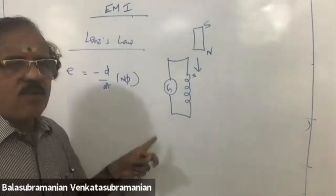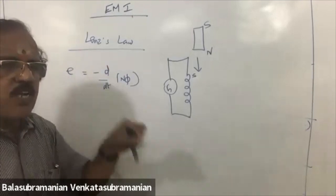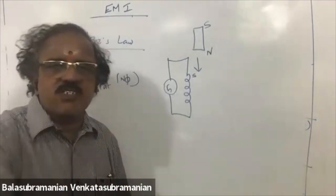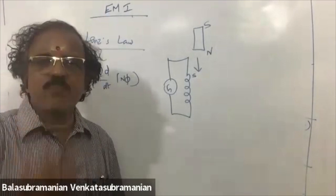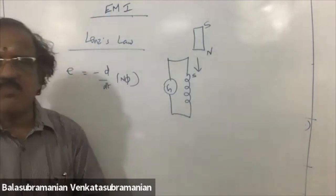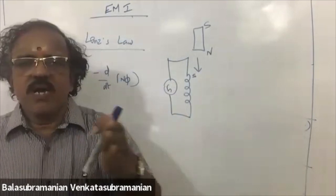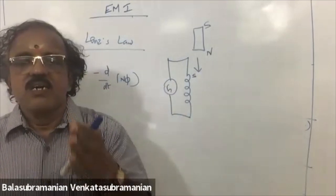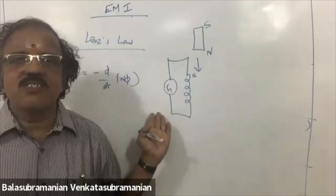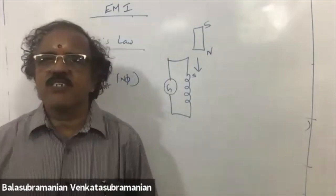Faraday's formula and Lenz's formula are the same, except one important change: the induced EMF in the circuit opposes the change that induces it — it always opposes the source. That opposition is why we put a negative sign in the formula. So we have covered: magnetic flux, magnetic induction, Faraday's experiments, Faraday's laws of EMI, and Lenz's law — including how Lenz's law is in accordance with the law of conservation of energy.